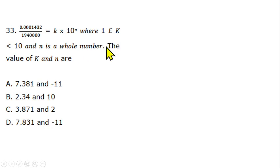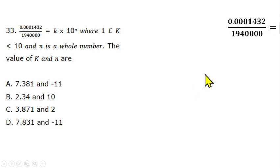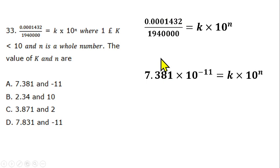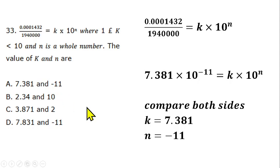Question 33 is from standard form. Dividing the given numbers yields approximately 0.000000007381 = 7.381 × 10⁻¹¹, expressed as k × 10ⁿ where 1 ≤ k < 10. Therefore k = 7.381 and n = minus 11. Option A is correct.